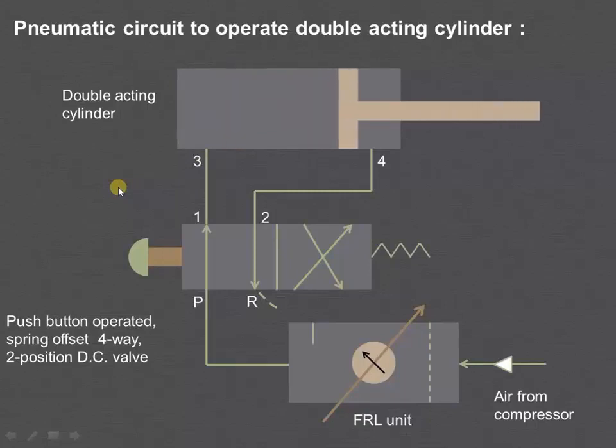This will cause the piston to move forward and air from the other side, that is the rod end side. From port 4 it will enter into port 2 and then it will be exhausted to the atmosphere. So in this way the working of double acting cylinder is there.